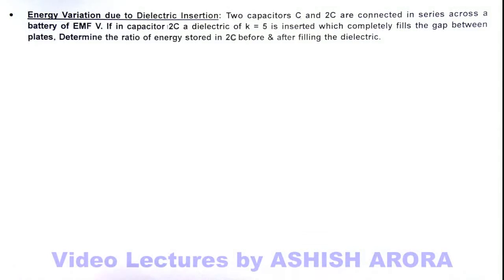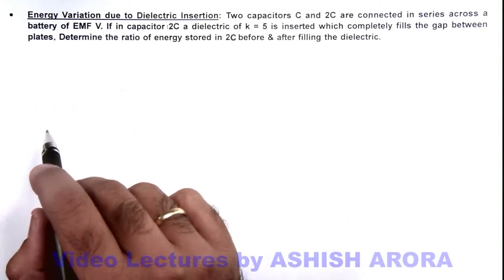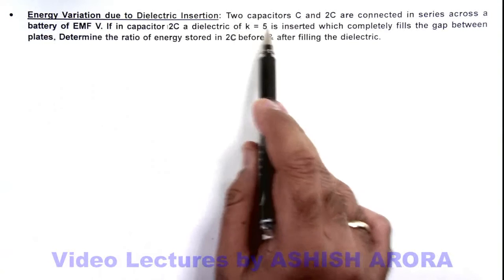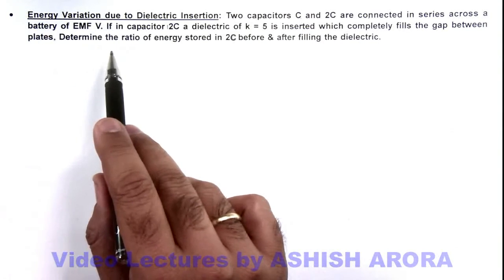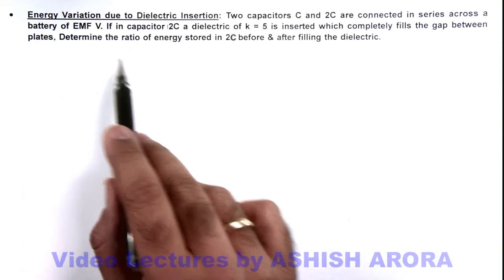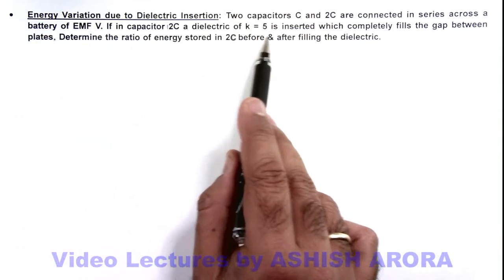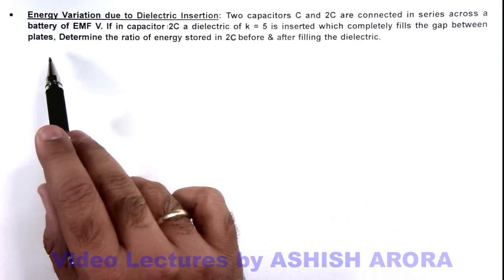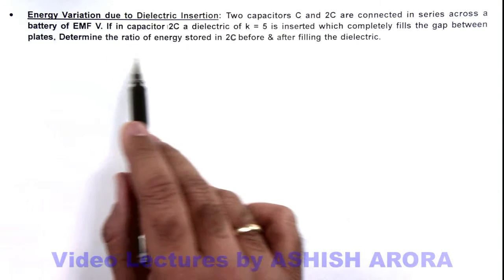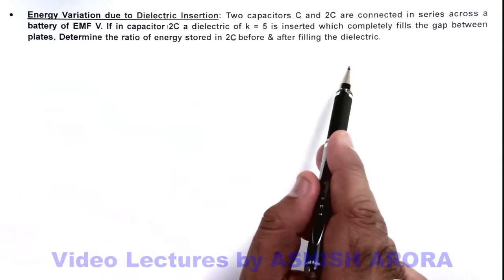In this illustration we'll study about the energy variation due to dielectric insertion. Here we are given that two capacitors C and 2C are connected in series across a battery of EMF V. And if in capacitor 2C a dielectric of k equal to 5 is inserted which completely fills the gap between the plates, we are required to determine the ratio of energy stored in 2C before and after filling the dielectric.